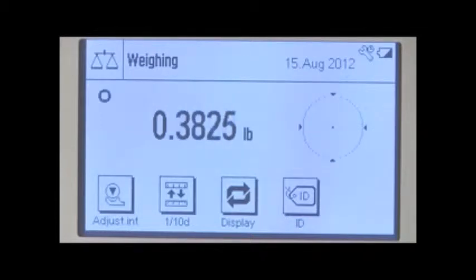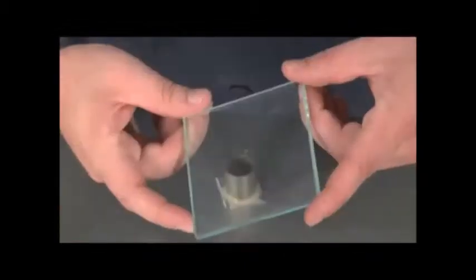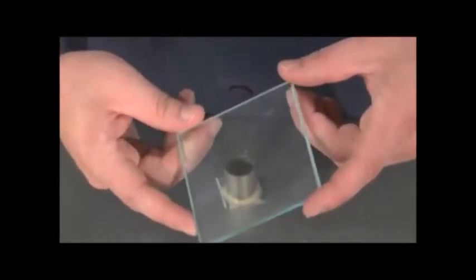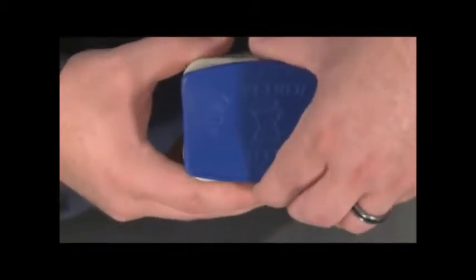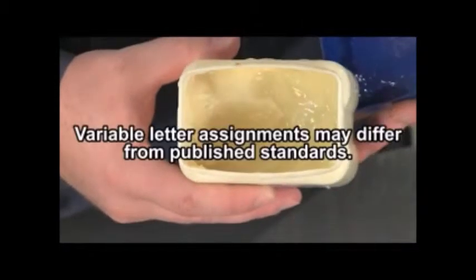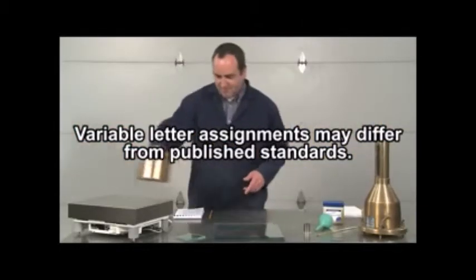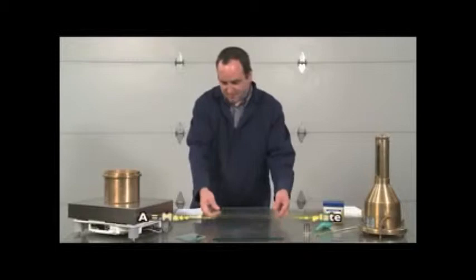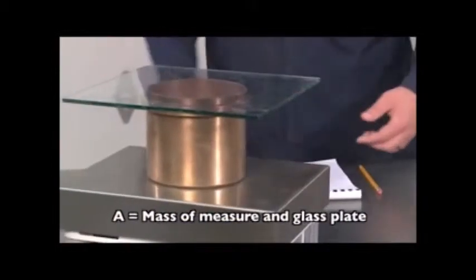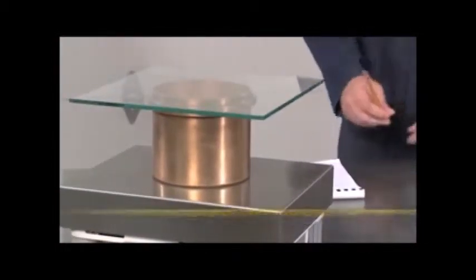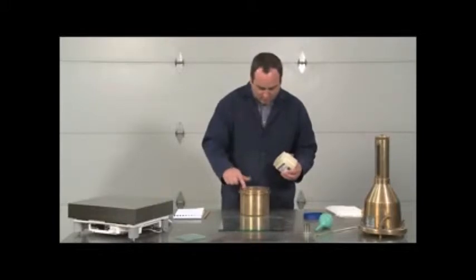You will need a balance readable to within a tenth of a percent of the sample mass or better, a thermometer accurate to one degree Fahrenheit, a glass plate at least a quarter of an inch thick and large enough to completely cover the top of the measure, and a supply of water-insoluble grease such as petroleum jelly. Weigh the bowl and plate, record the mass to the nearest tenth of a pound and designate the mass as A.